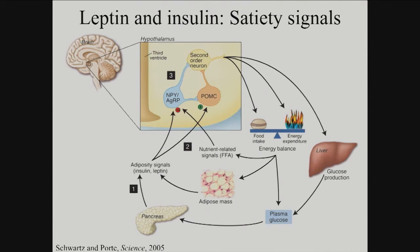Leptin and insulin are your satiety signals — the signals that tell you you're full. Leptin is produced by your fat, the pancreas produces insulin, and those signals go into the brain into the hypothalamus, where they interact with neurons to regulate your appetite and food intake. When you have high levels of insulin and leptin, you reduce food intake and increase energy expenditure. You also signal to your liver, if you have high levels of insulin, to stop glucose production — you don't want to release more glucose into your blood if you already have glucose from food. When you have low levels of these, it tells the neurons to increase food intake, decrease energy expenditure, and tells your liver to release more glucose into your blood.